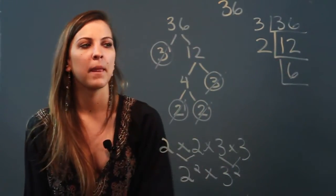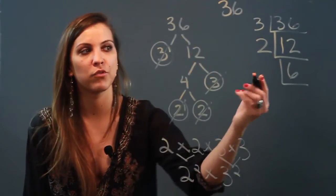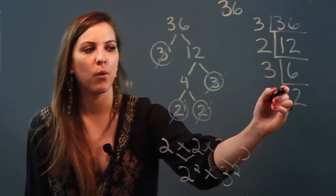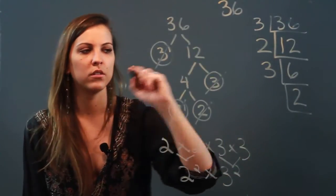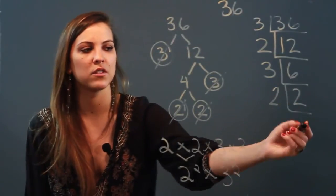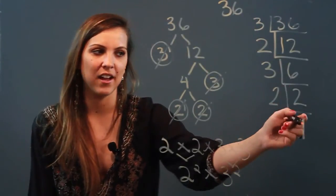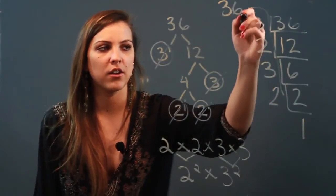Draw your next division ladder step. What's a prime number that can go into 6? 3. So 3 goes into 6 two times. And now what's a prime number that can go into 2? 2. And 2 goes into 2 one time. When you see that 1, you've got to remember: 1 and done.